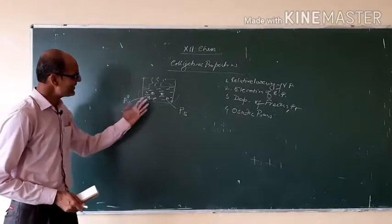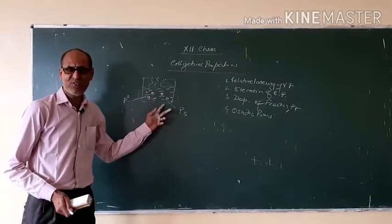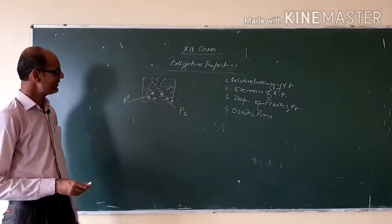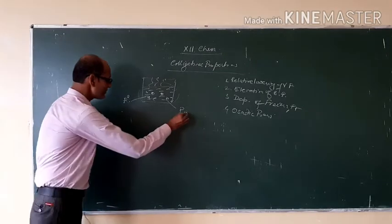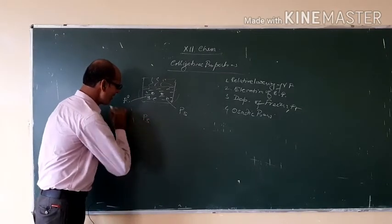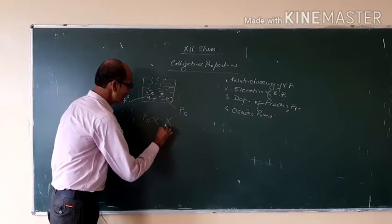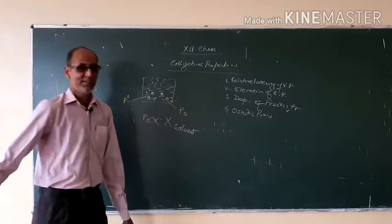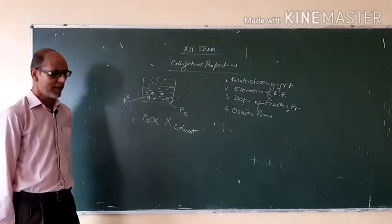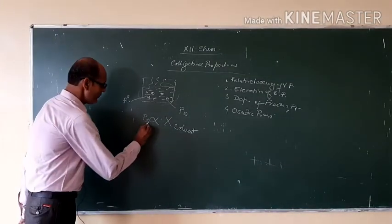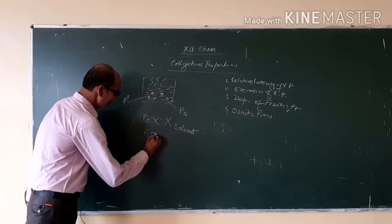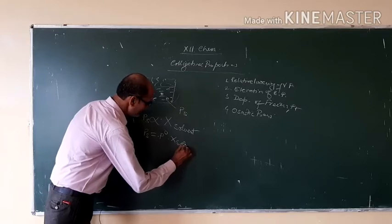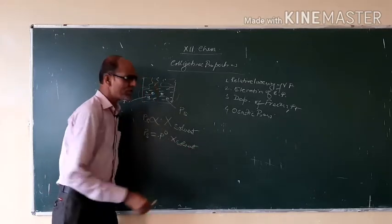When we add solute, the mole fraction of solvent decreases, that is why vapor pressure of solution decreases. Vapor pressure of solution is directly proportional to the mole fraction of solvent. This is Raoult's law. If we write like this: PS equals P0 times X solvent, that is our mole fraction of solvent.